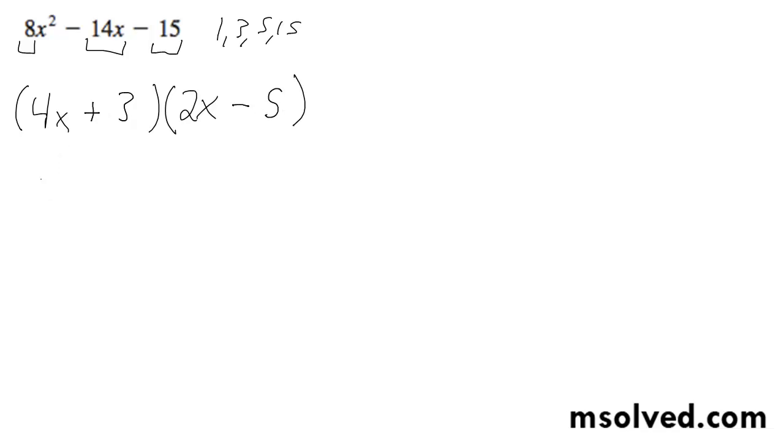So we can double check. 4x times 2x is 8x squared. Minus 20x plus 6x minus 15.